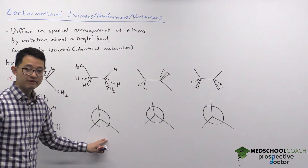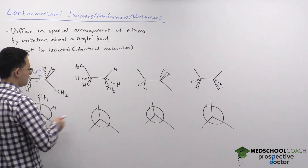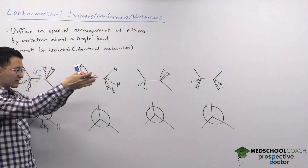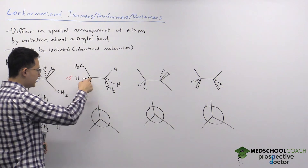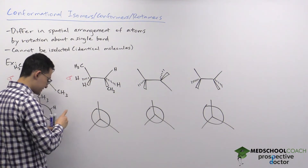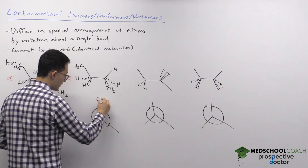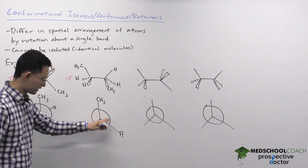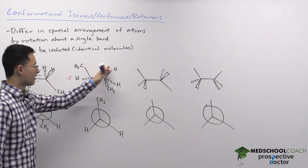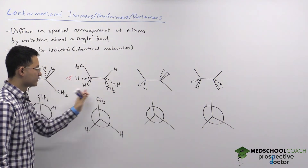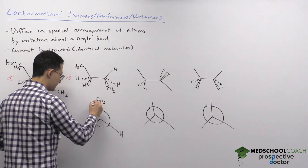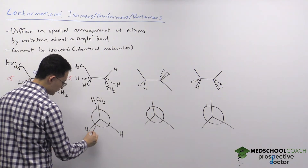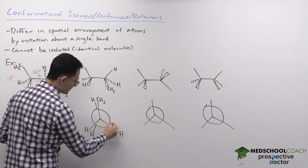We can draw a Newman projection for this new conformation, viewing the molecule from the same left-side angle. The front carbon is unchanged — still the methyl group up and hydrogens on either side. When we look at the back carbon (large circle) after the 60-degree rotation, all the groups are essentially stacked on top of each other: behind the methyl group you see a hydrogen, and behind each hydrogen you see another group directly behind it.